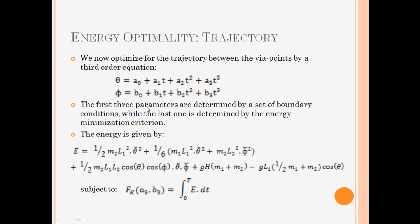And the last one is determined by the energy optimal criteria. So the boundary conditions are given in terms of the location, velocity and accelerations at various points. Now, the continuity of location is of course a necessity. While the continuity of velocity and acceleration is desired because this will ensure that there is no jerky motion.